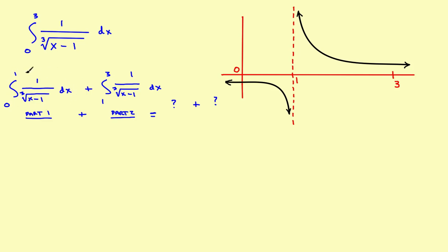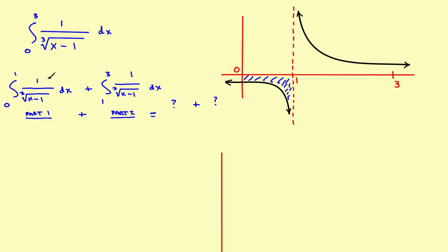Looking at the integral on the left, we only worry about that one. We want the integral from 0 to 1, which gives us the area in that region. We'll treat them as two completely separate problems. This requires U-substitution, so it'll take a while. We'll put Part 1 on the left-hand side of the page and Part 2 on the right-hand side, with a line down the middle.